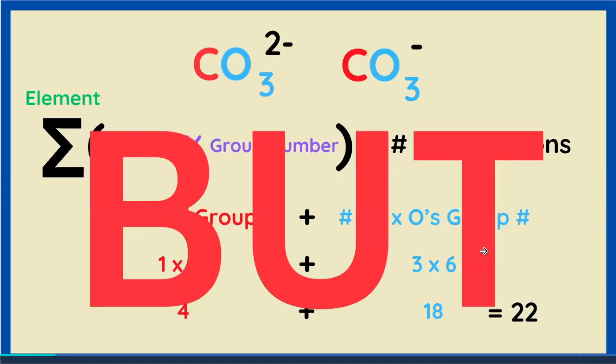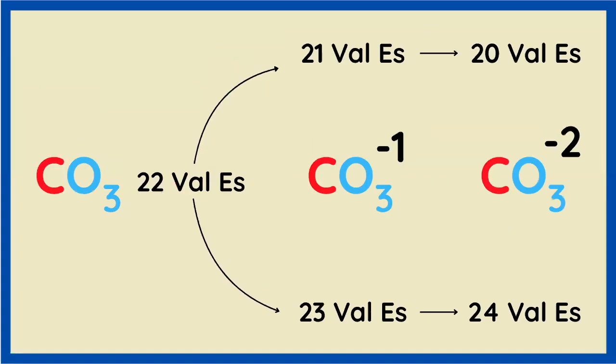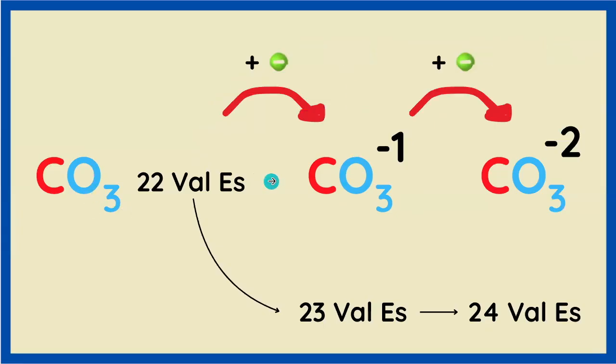However, we obviously have not accounted for the fact that they both have a charge. This is minus two, this is minus one. So if our summation equation tells us that neutral CO3 has twenty-two valence electrons, does adding negative charge increase or decrease the number of valence electrons? For example, does CO3 minus one have one more or one less valence electrons than CO3 neutral? Well, we're going to add electrons because each electron has a negative one charge. So CO3 minus and CO3 minus two have twenty-three and twenty-four valence electrons, respectively.